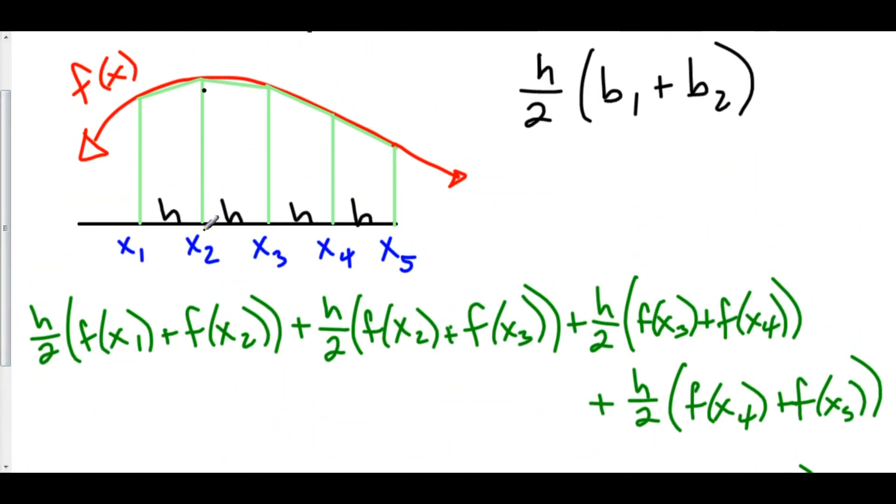The reason is this f of x sub 2 here, this trapezoid length, is actually the length of 2 trapezoids. It is being applied to the right hand side of trapezoid number 1, as well as the left hand side of trapezoid number 2. So when we find the area of trapezoid number 1, x sub 2 is my b2. But when I find the area of trapezoid number 2, f of x sub 2 is my b1.